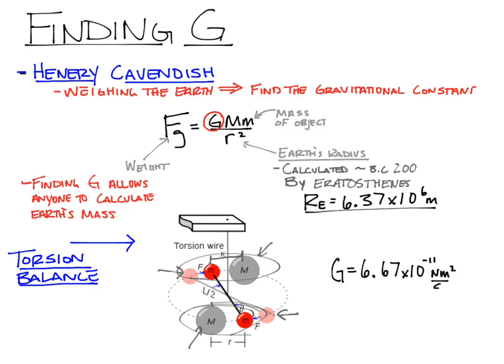When he does his experiment, G comes out to a very tiny 6.67 × 10⁻¹¹ Newton·meters²/kilogram². That's the tiny number he needed to be able to calculate the mass of the Earth and actually use Newton's universal gravitation. It's important that you know who Henry Cavendish is and what the torsion balance was and a little bit of how it worked.